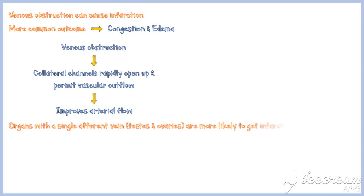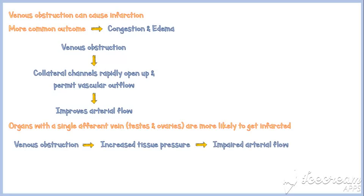However, organs with a single afferent vein — such as the testis and ovaries — are more likely to get infarcted with venous obstruction. Because they have a single vein, its obstruction will increase pressure within the tissue as no collaterals are present, ultimately leading to impaired arterial flow, followed by ischemia and infarction. Capillary obstruction may also cause infarction; for example, vasculitis of capillaries may narrow the capillary lumen, causing ischemia and infarction.